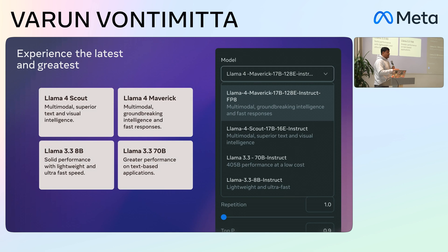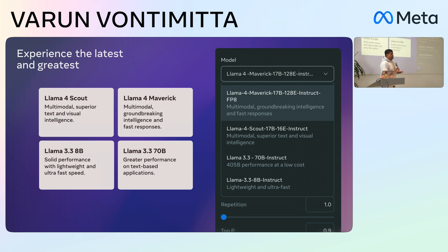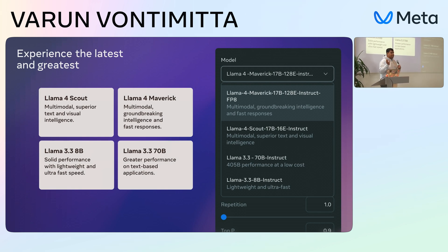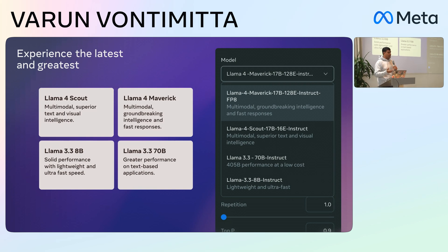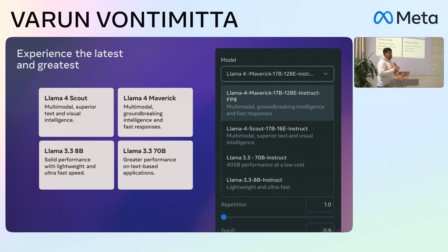We also have the 3.3 8B model available. Speaking of it, we are working on a new smaller model that was also mentioned during LlamaCon — it's called LlamaLite. That's going to be something to look forward to in the coming weeks and months. We also have the 3.3 8B model available here for you to play with, which is not open source but is available on the platform.